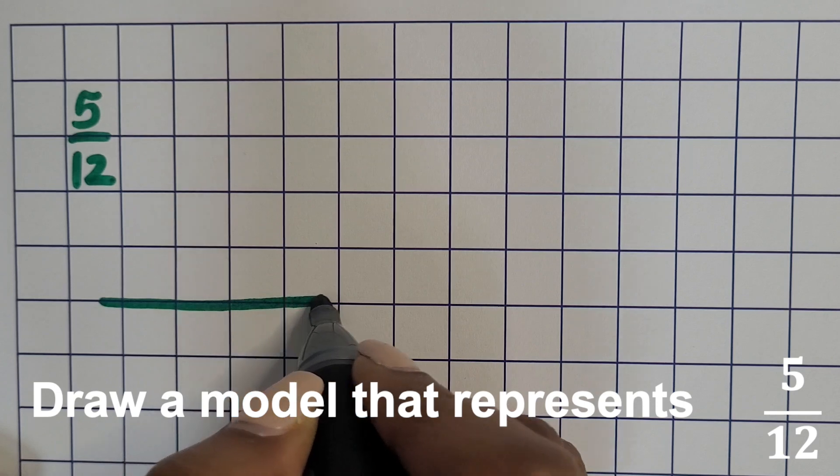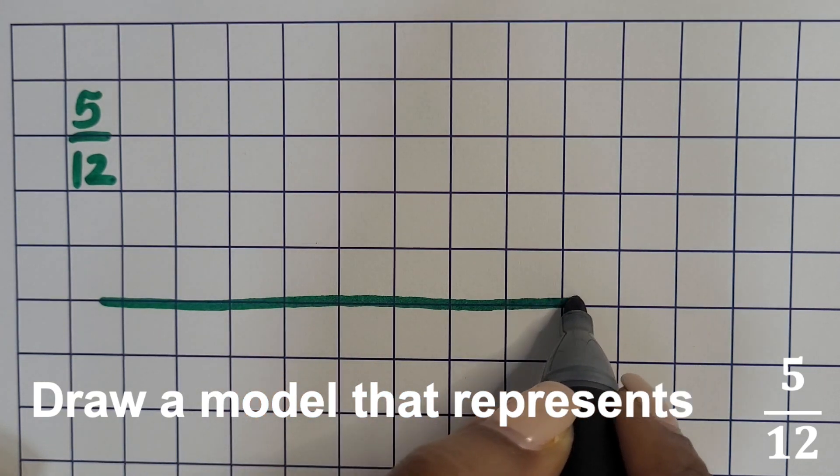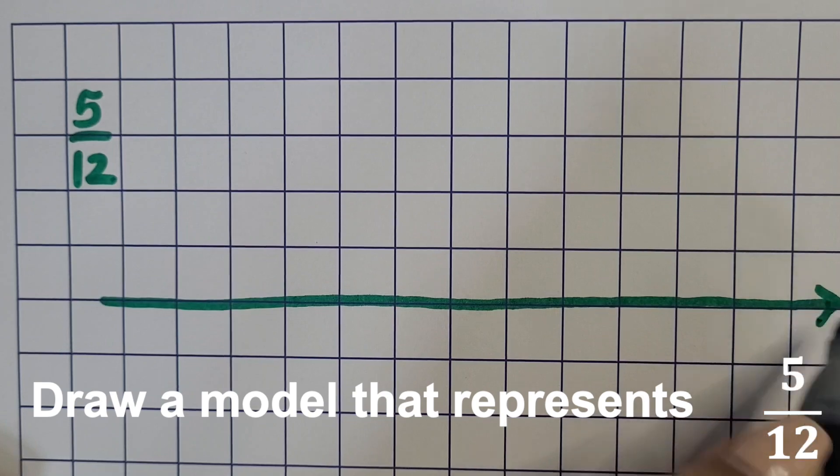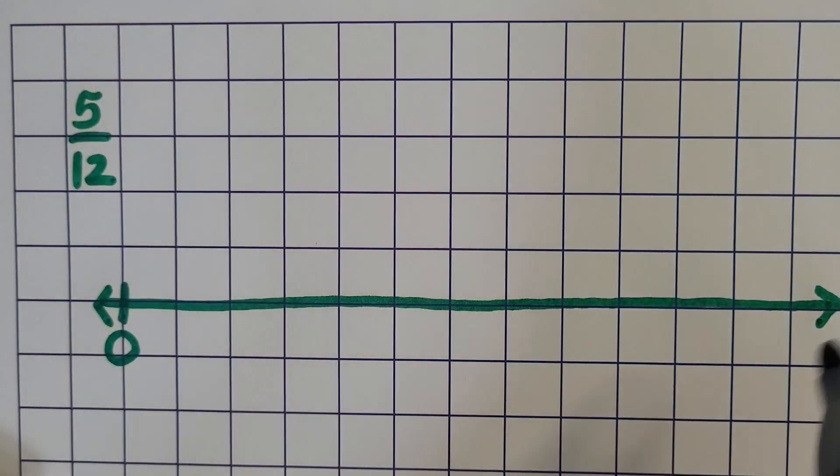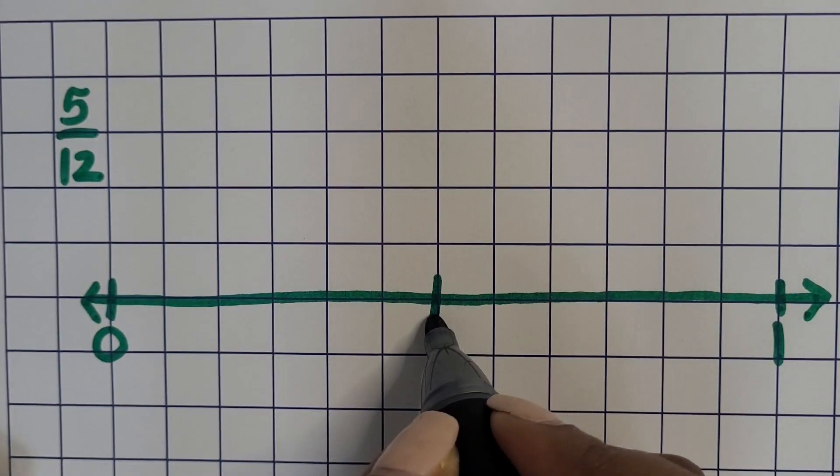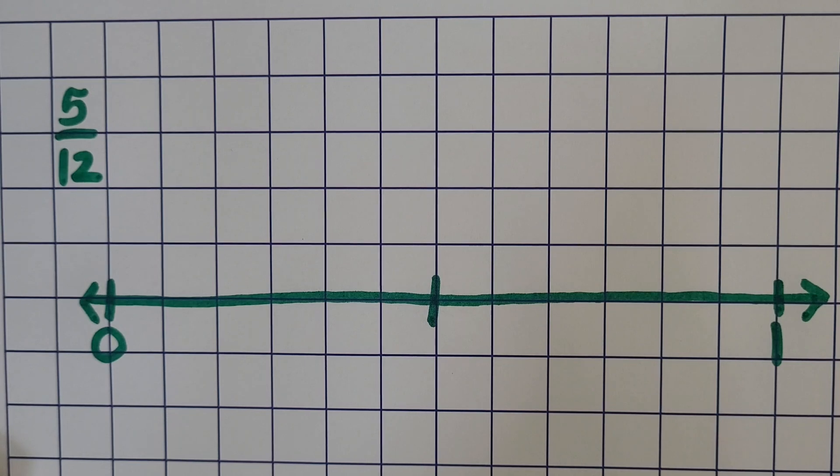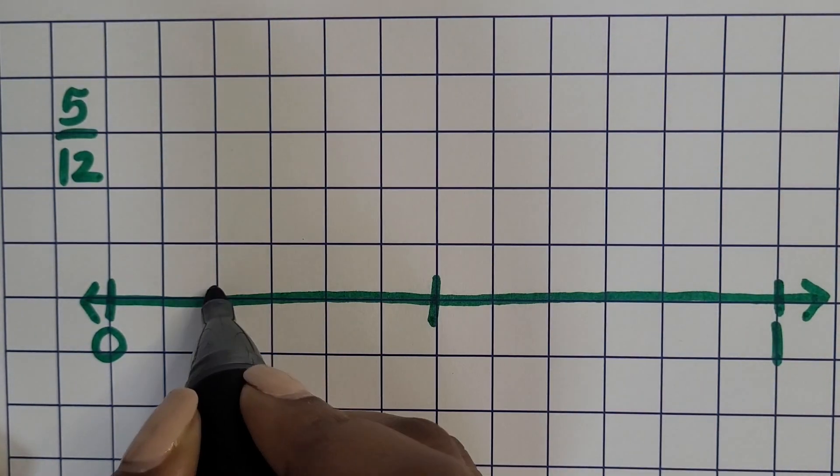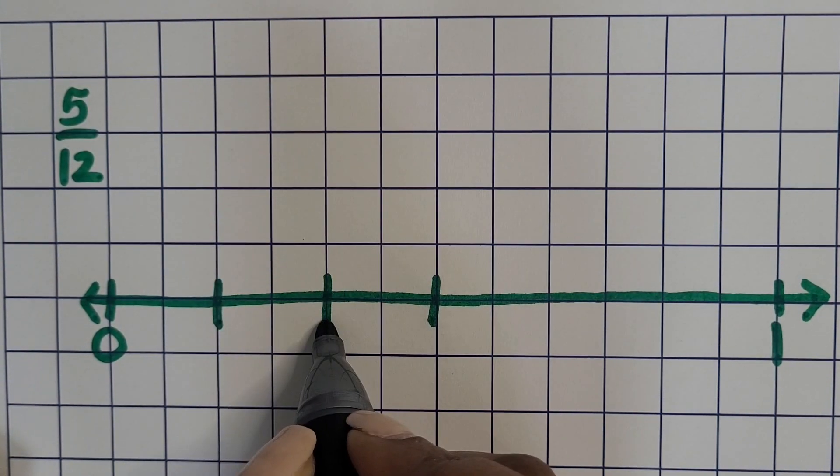Next we'll represent five-twelfths. So again, start with a line, create your endpoints, zero on the left, one on the right, and then partition or make a tick mark right down the middle. Then we're going to partition each half into thirds. That will create six.